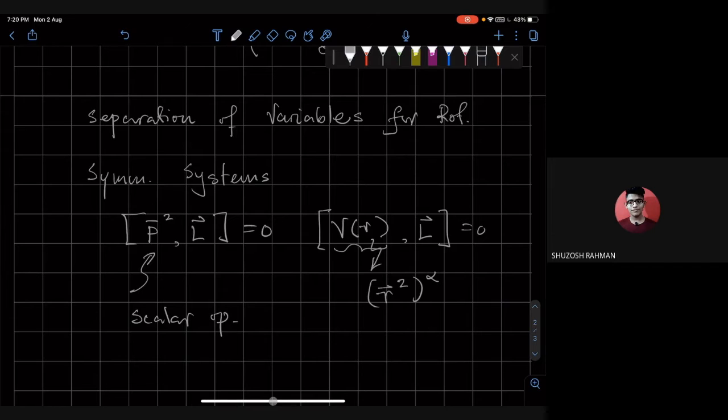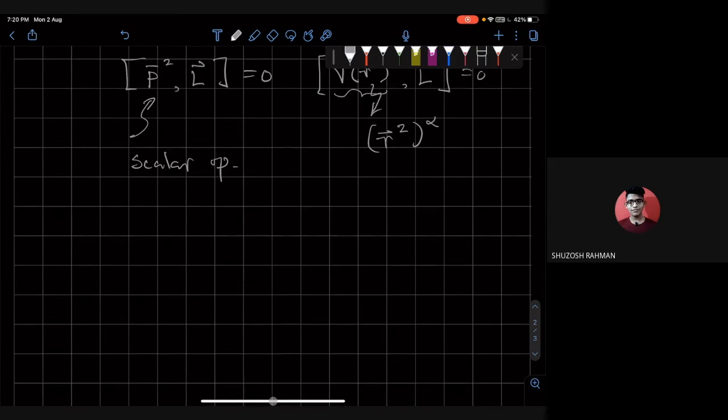Okay, so because of this, we expect there to be a separation of variable of the differential equation. So what is the differential equation? Well, we know what p squared is. So the differential equation is going to be, we are going to look at the time independent Schrodinger equation.